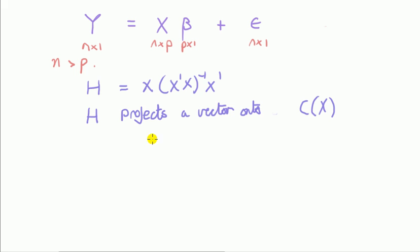So just why is this hat matrix, which is a function of the explanatory variables in regression, why is it said to be a projection matrix of a vector onto the column space of X?